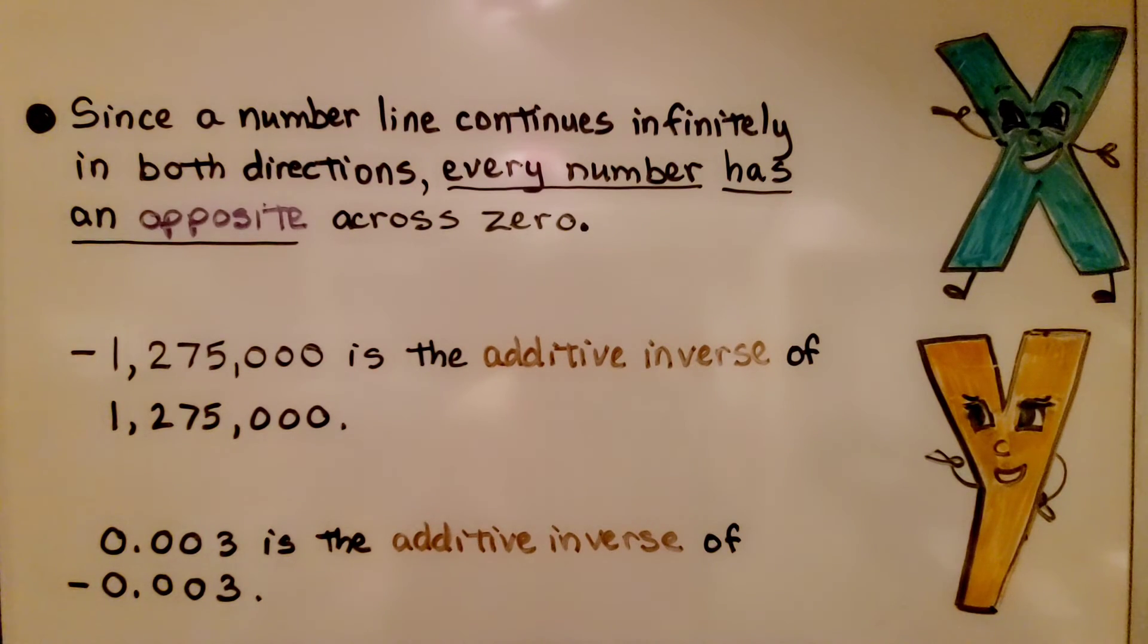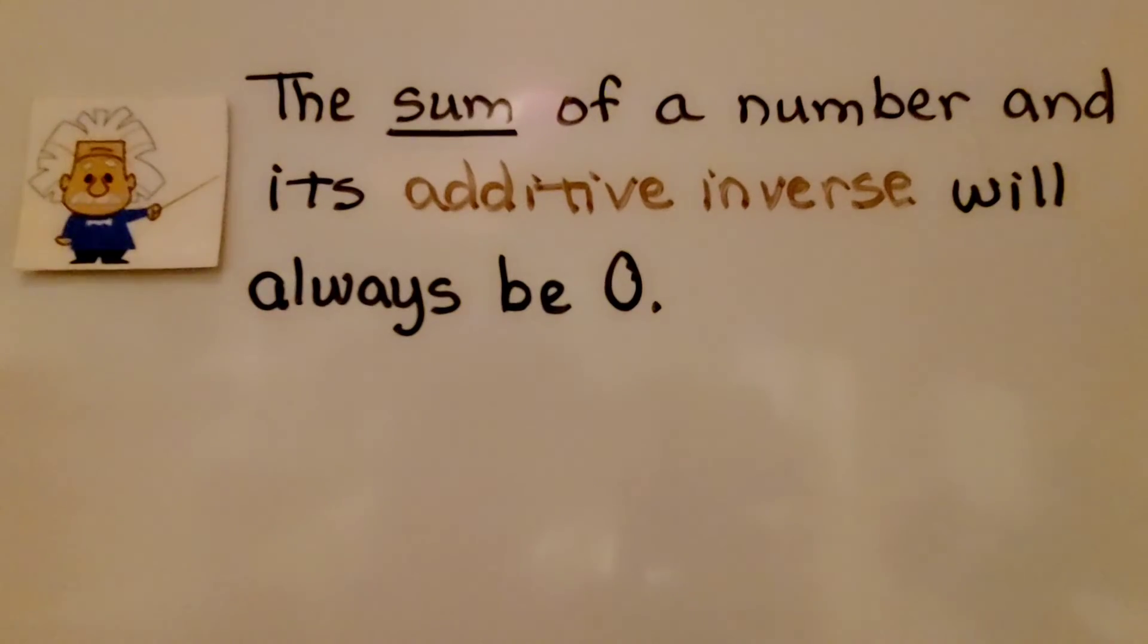Since a number line continues infinitely in both directions, every number has an opposite across zero. Negative 1,275,000 is the additive inverse of positive 1,275,000. Three thousandths is the additive inverse of negative 3,000. The sum of a number and its additive inverse will always be zero.